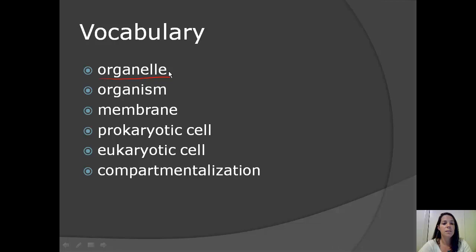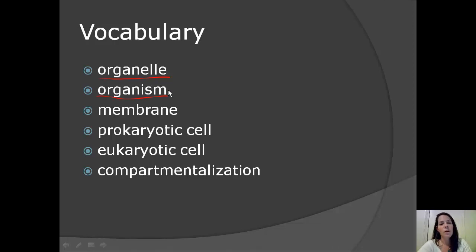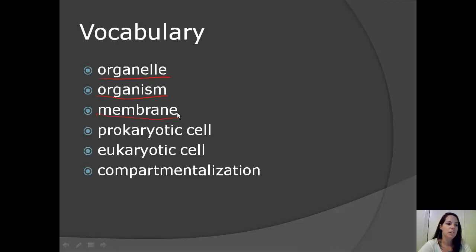Now, organelle is very easy to confuse with organism. Organism is an individual living thing made up of one or more cells. So an organism can be a bacteria or it could be a human being, just like you and me. A membrane is a flexible sheet-like structure that acts as a boundary or a partition within an organism or a cell.